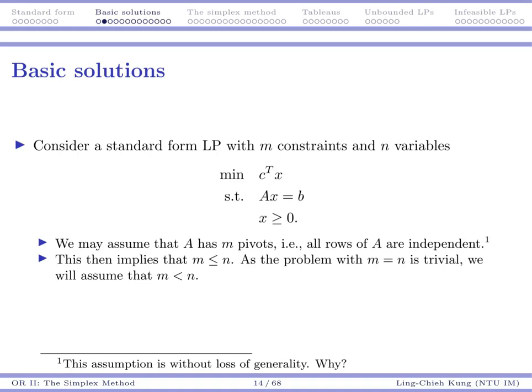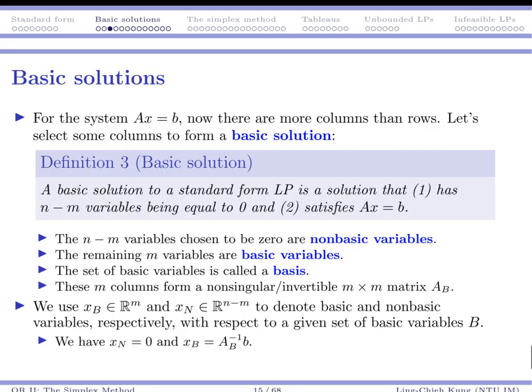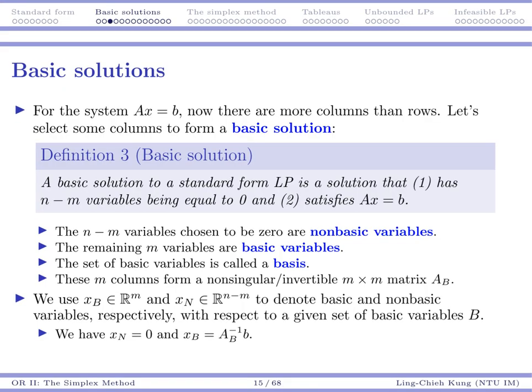That's not very easy, but now we have one conclusion. For your matrix A, all the rows are independent, all the constraints are independent. Now we are able to define basic solutions.